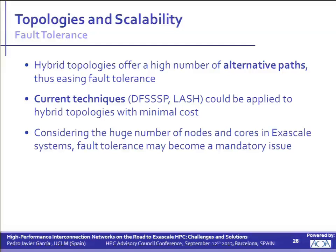Fault tolerance may be a mandatory issue. In an Exascale system with a huge number of nodes and really huge interconnects, it would be mandatory to have some type of fault tolerance mechanism providing alternative paths, because the probability of having failures in the network increases with system size. Currently we are exploring the possibility of applying recently proposed fault tolerance mechanisms like DF3SP, LASH, and so on, to existing or promising topologies like KNS. It's clear that fault tolerance must be analyzed in order to reach the Exascale challenge.